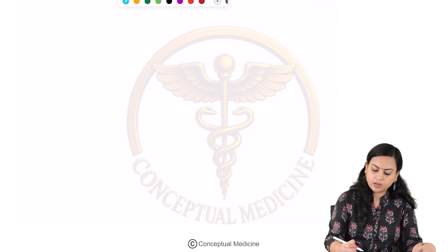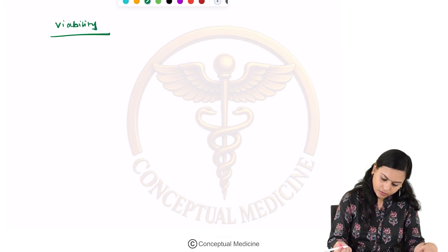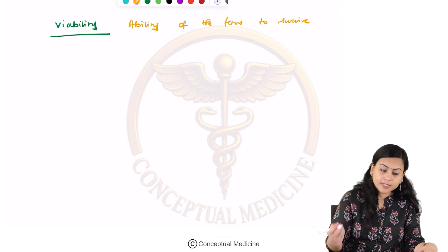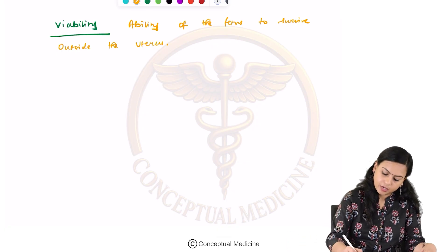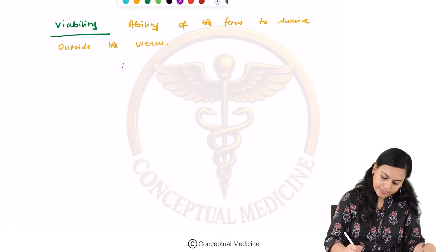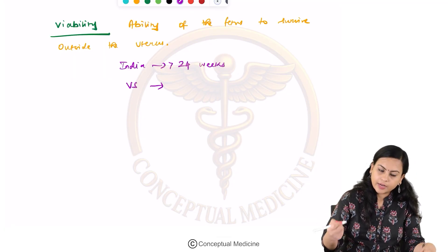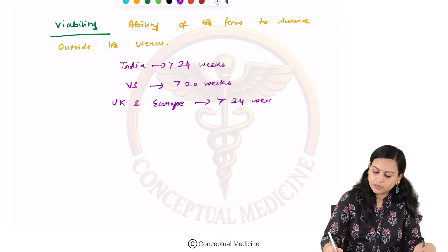I want to make clear about viability. Viability is the ability of the fetus to survive outside the uterus. This period differs according to the country. For example, in India it is considered after 24 weeks. In the US, viability can be considered after 20 weeks, whereas in UK and Europe it is considered after 24 weeks.